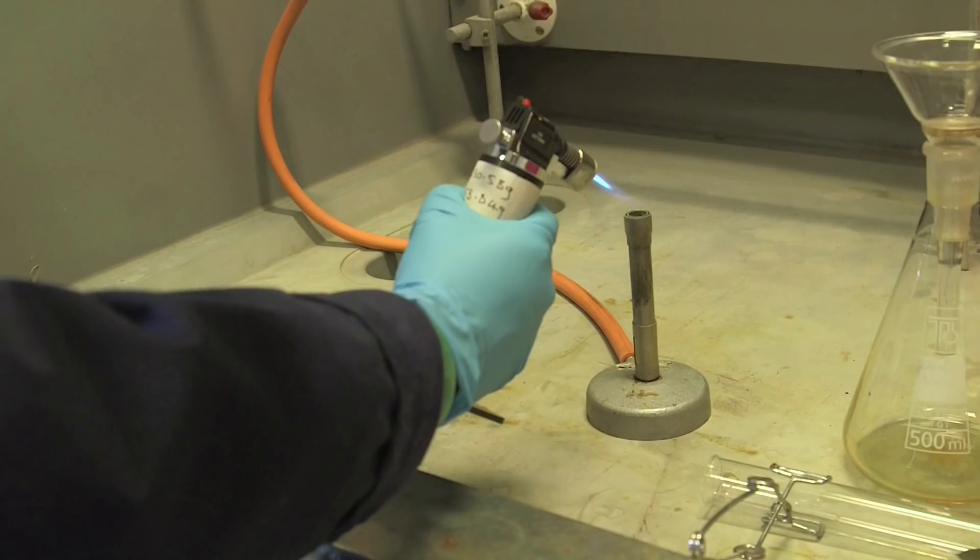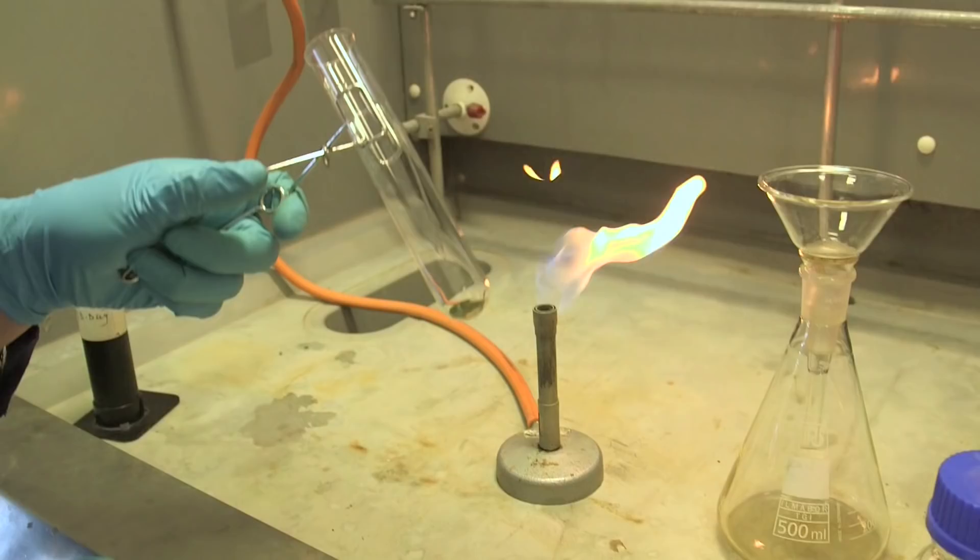So first thing we need to do is light the Bunsen. There we are. And then what we've got inside the boiling tube is actually potassium permanganate.